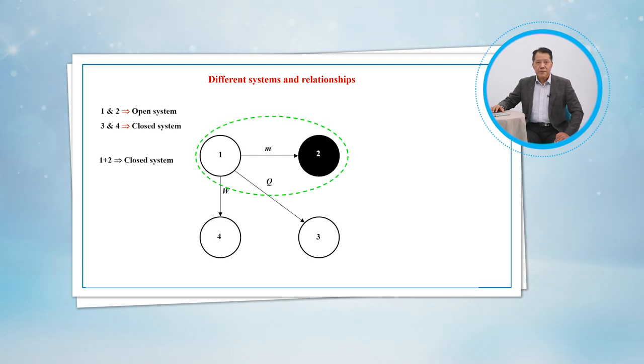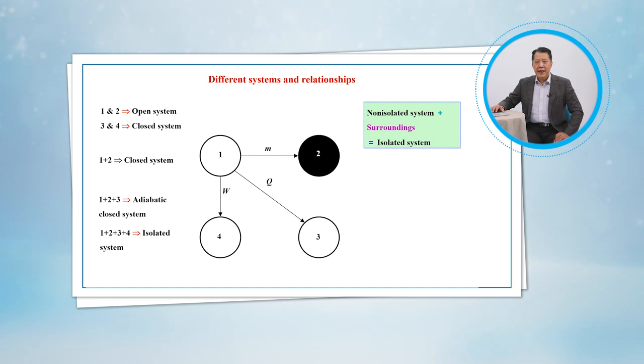However, a new system consisted of system 1 and system 2 becomes a closed system. A new system consisted of systems 1, 2, and 3 becomes an adiabatic closed system. A new system consisted of systems 1, 2, 3, and 4 becomes an isolated system. This means an isolated system can be formed by the non-isolated systems and the surroundings. This idea is very important in our class.